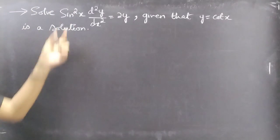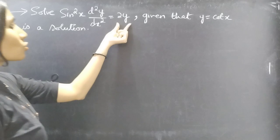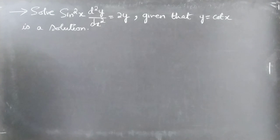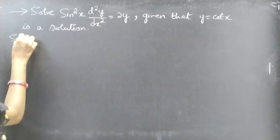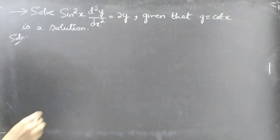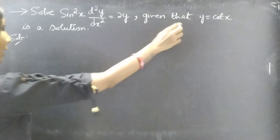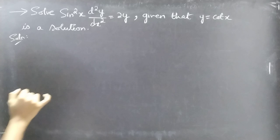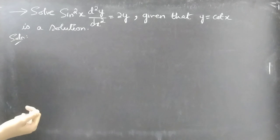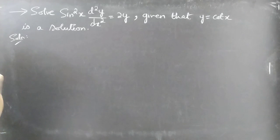Problem: Solve sin²x · d²y/dx² = 2y, given that y = cot x is a solution. We are already given a differential equation of second order and its solution y = cot x. We have to find the general solution to our given problem.